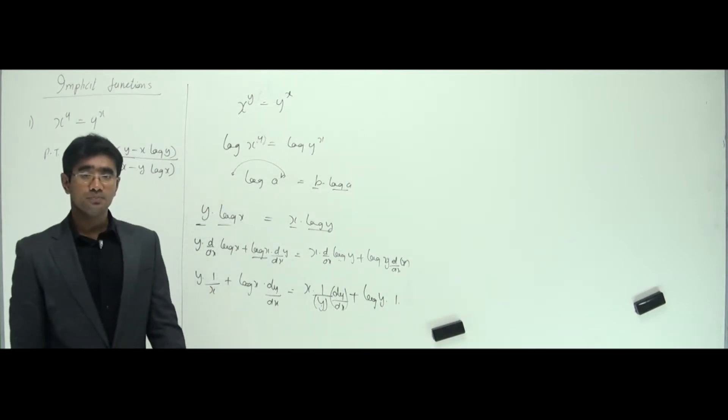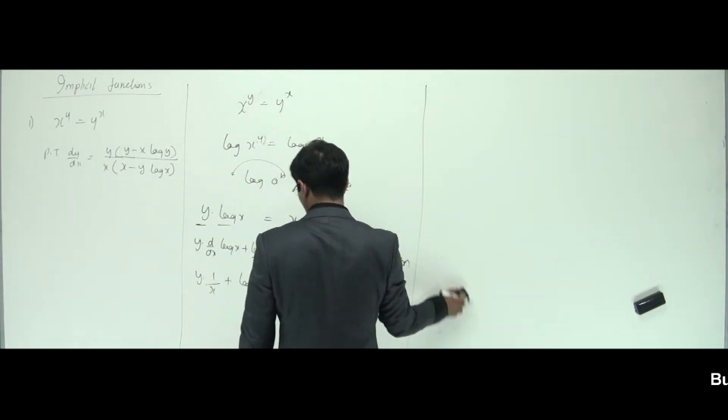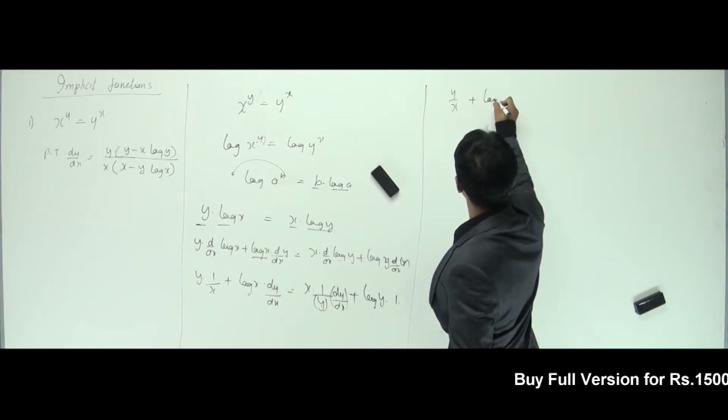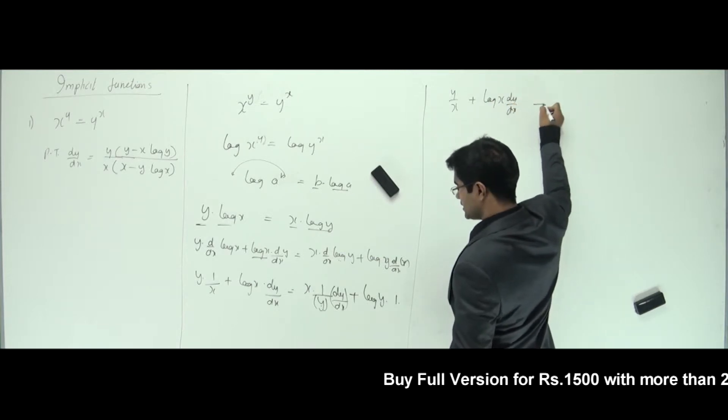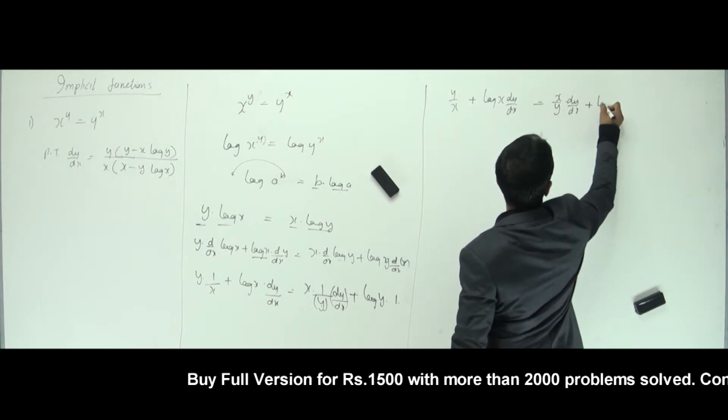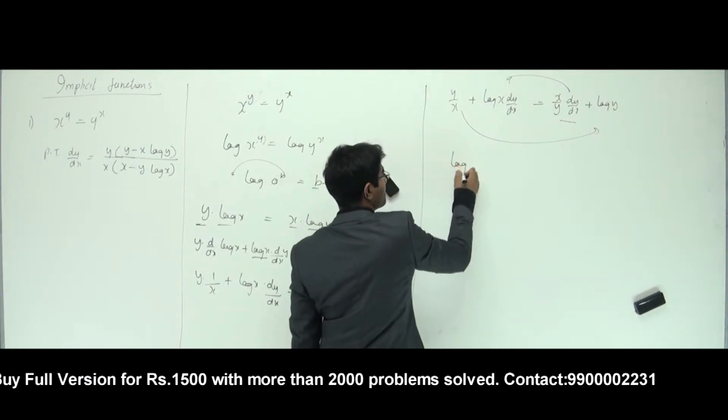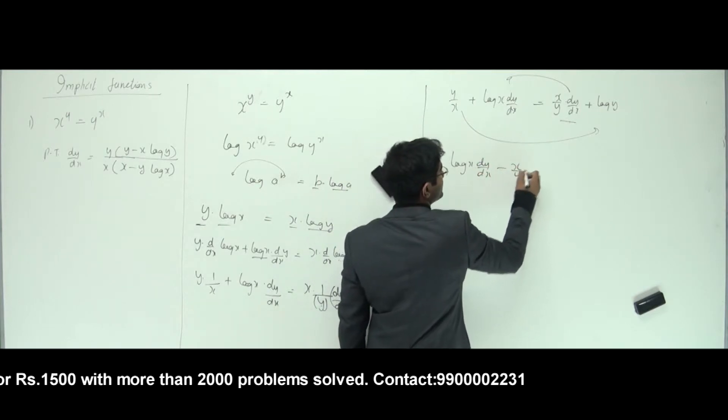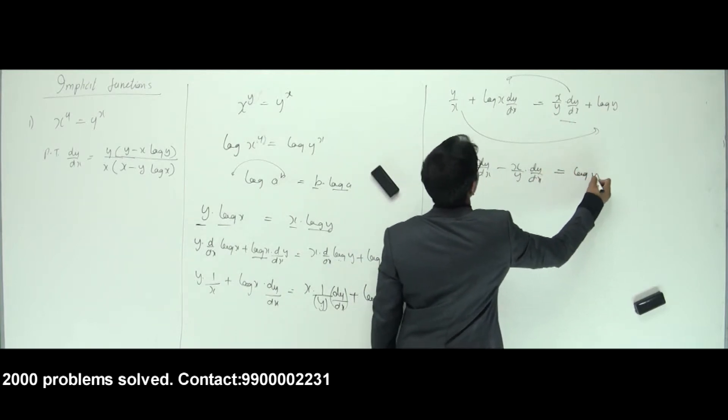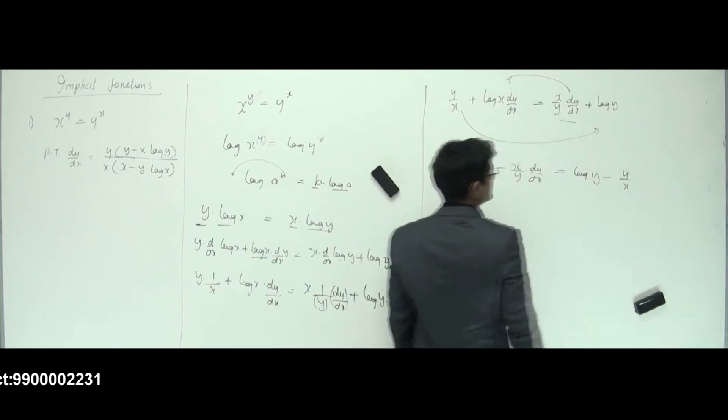Now, what is the next thing I'm supposed to do? I'm supposed to take dy by dx on the left-hand side, everything else on the right-hand side. Let's see what happens here. I can see that y by x can be like this, and I have log x dy by dx. Yes, it is equal to x by y dy by dx plus log y. I'll take this on the left-hand side and put this on the right-hand side. So it goes like log x dy by dx minus x by y dy by dx. Yes. It's equal to log y minus this guy, that is y by x, that's it.